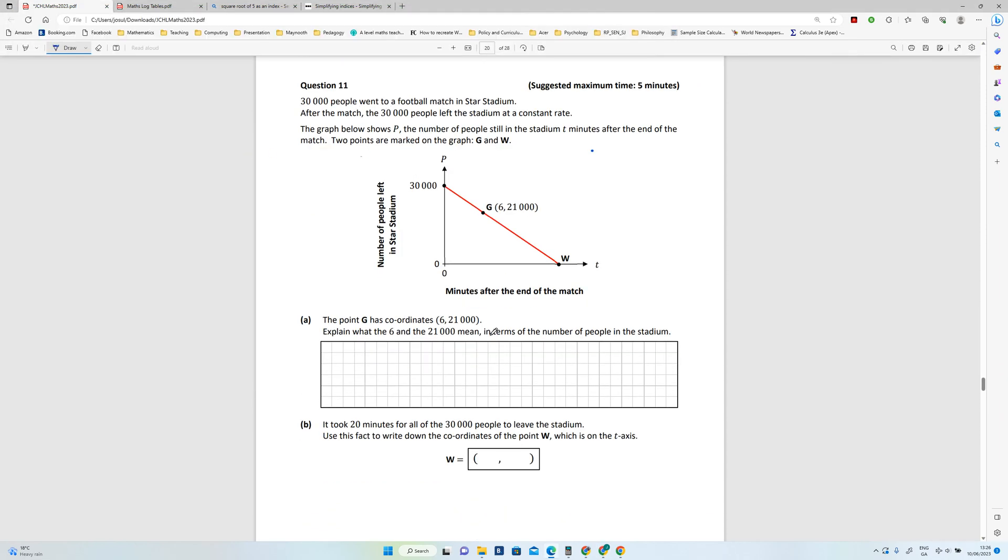Now, 2023 Junior Cert Maths Higher Level Question A-11. 30,000 people went to a football match in Star Stadium. After the match, 30,000 left at a constant rate. The graph below shows P, the number of people still in the stadium, T minutes after the end of the match. Two points are shown on the graph: G and W.